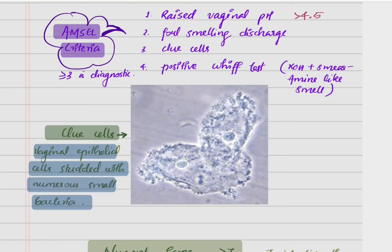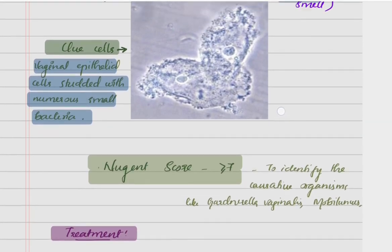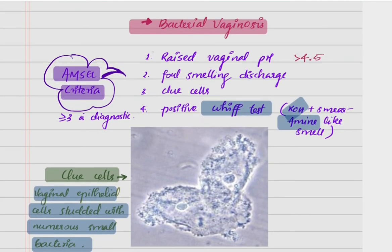Clue cells are vaginal epithelial cells that are studded on the surface with numerous small bacteria. This is the image showing the clue cells — the epithelial cells studded with numerous small bacteria. The whiff test means when we add KOH to the smear, there will come an amine-like smell — that is a positive whiff test.